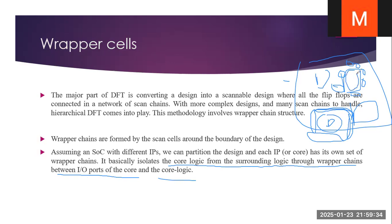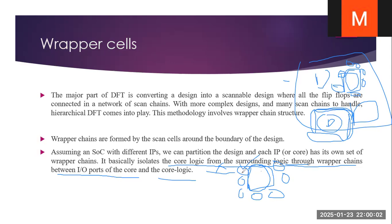This is the core logic. The core logic has input pins. These are the vapor chains. As I said at the start, it will block X-propagation. This core logic design will be isolated from the vapor boundary cells. So this is a basic introduction about the vapor cells.